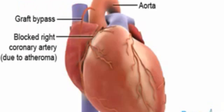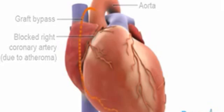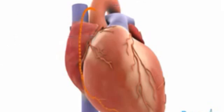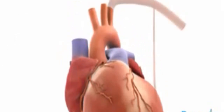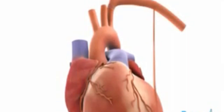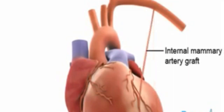The graft is attached from your aorta, your main artery, to a point in the coronary artery beyond the blockage. Sometimes a graft is also created from the internal mammary artery, which is diverted from behind the sternum or chest bone.